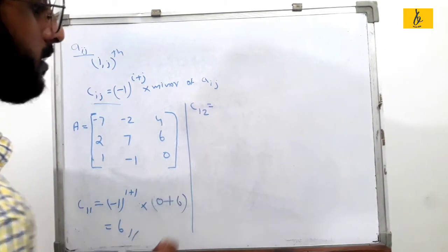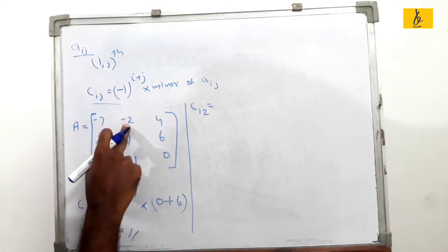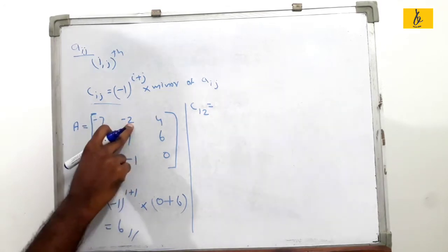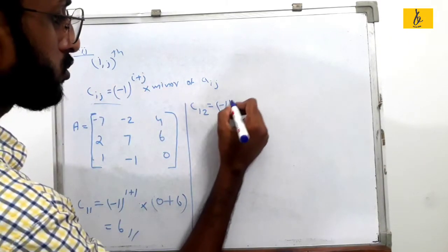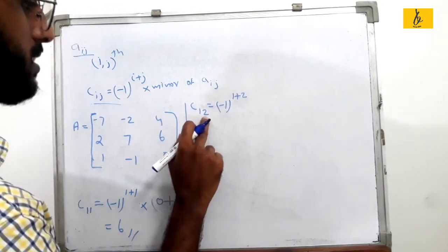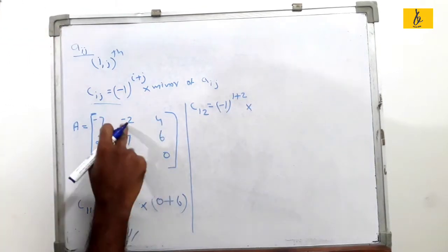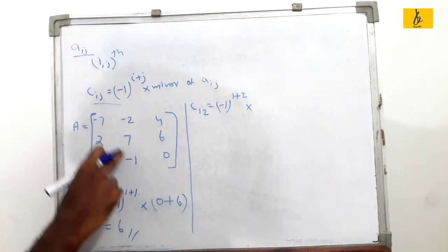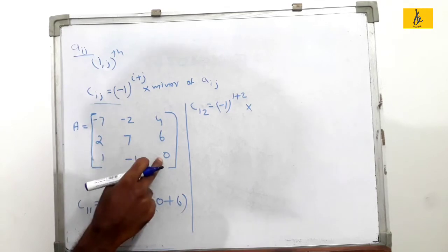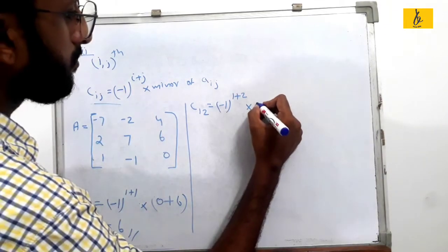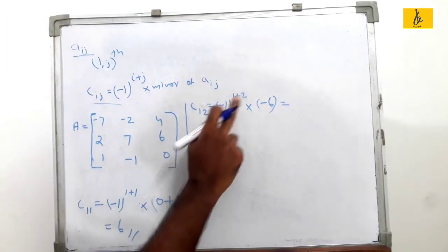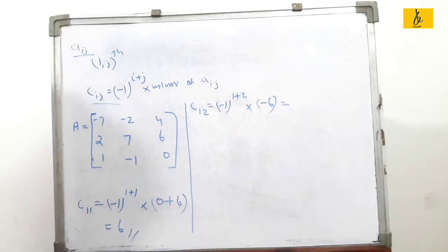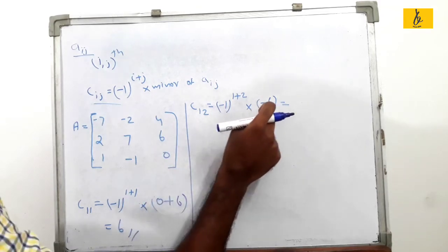Similarly, C_12: minus 1 raised to 1 plus 2, into the minor. Row 2 into 0 minus 1 into 6 gives 0 minus 6 equals minus 6. Then minus 1 raised to 3 times minus 6 gives C_12 equals 6.